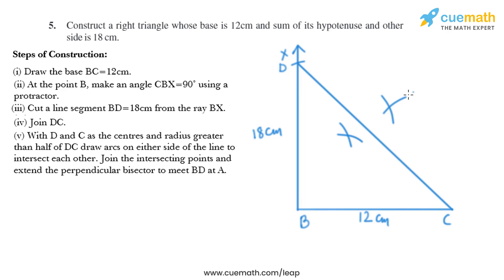Now we'll draw a line that meets this intersecting point and we'll extend this line to BD. So like that we'll draw a line and we'll mark this point of intersection as A.